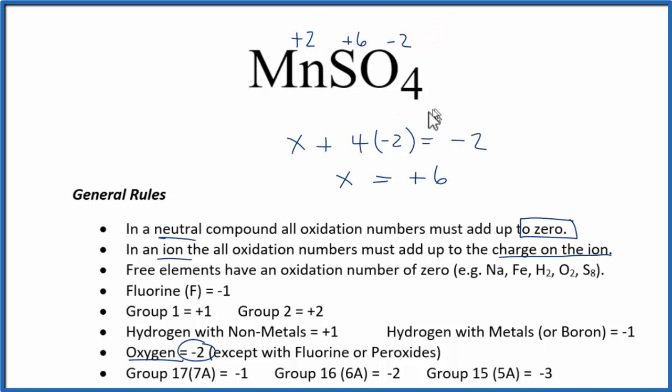And so now we know the oxidation numbers on each element. Manganese is plus 2. Sulfur is plus 6. And each one of these oxygens is minus 2. This is Dr. B with the oxidation numbers for each element here in MnSO4. And thanks for watching.